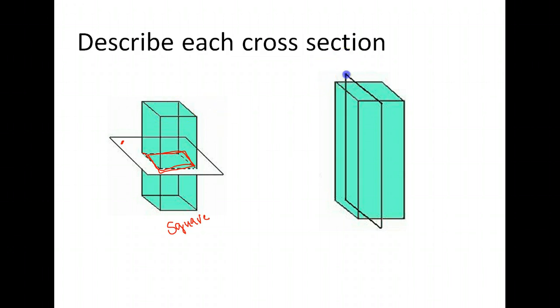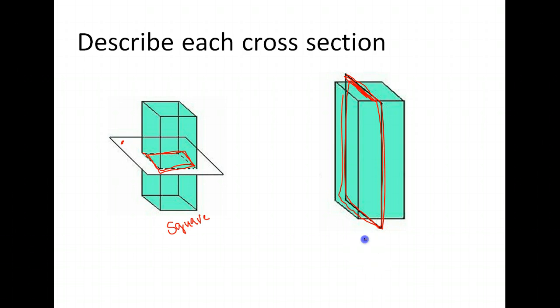What if instead we took and we cut it up and down? What kind of cross-section would we get? Well, it would be this shape right here, which is a rectangle.